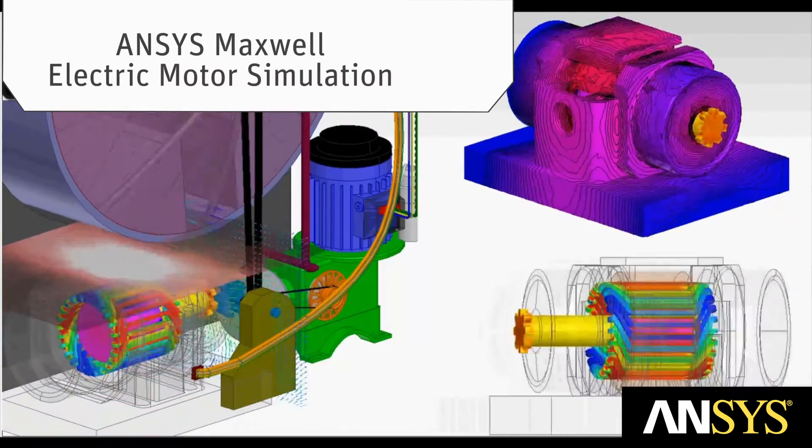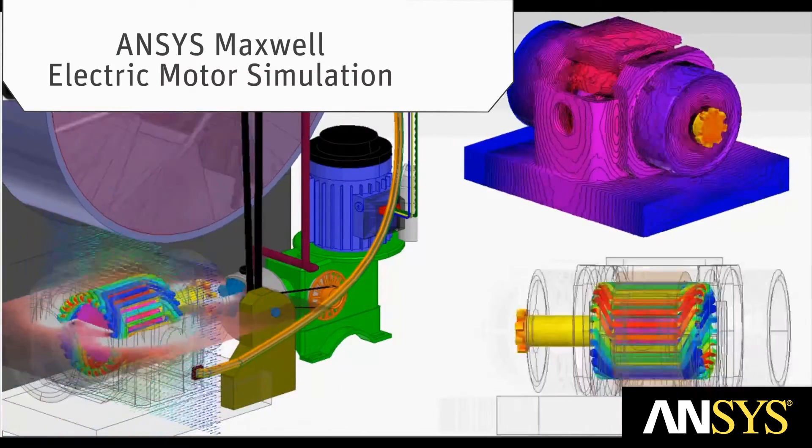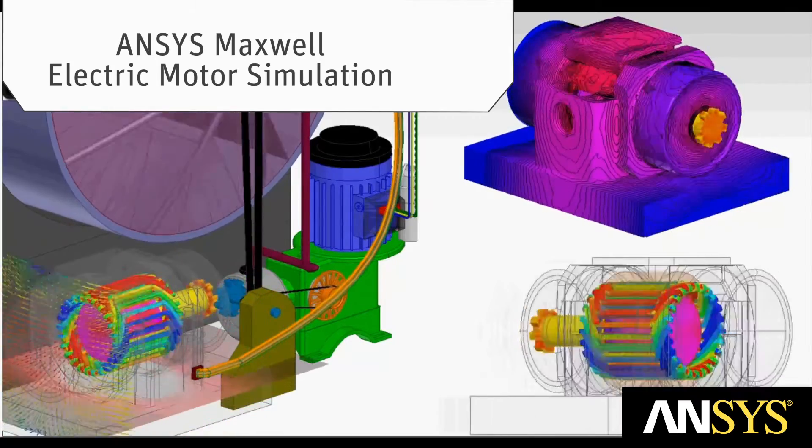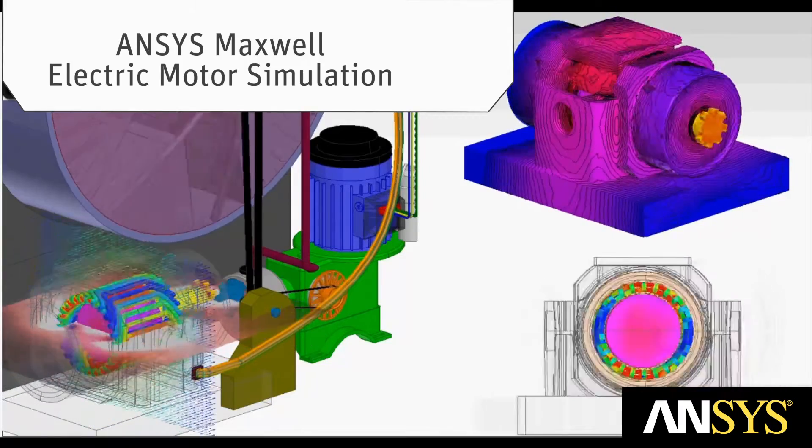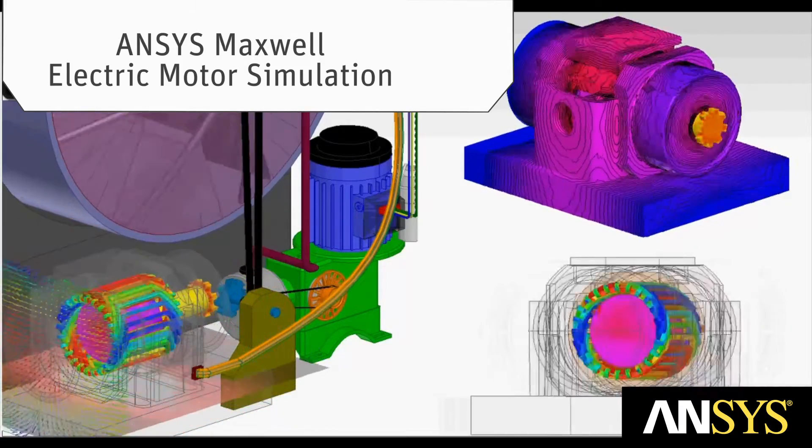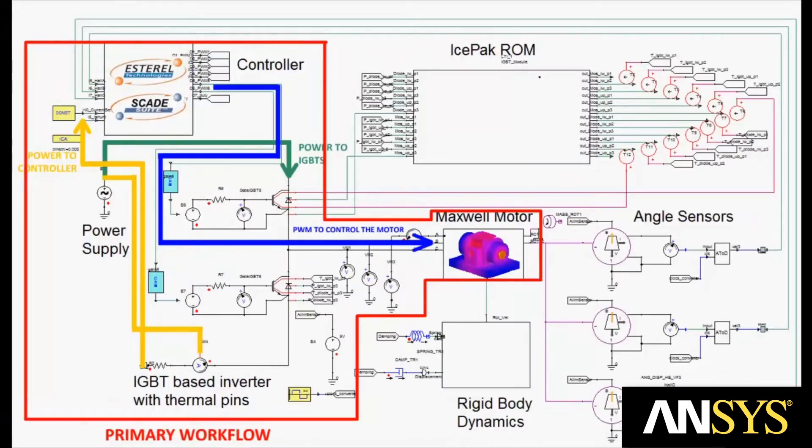3D electromagnetic simulations are used to generate high-fidelity reduced-order models, creating a powerful electromagnetic-based design flow that combines complex circuits with physics-accurate component models. This completes the primary workflow for the motors with embedded drive for a variable-speed motor system.